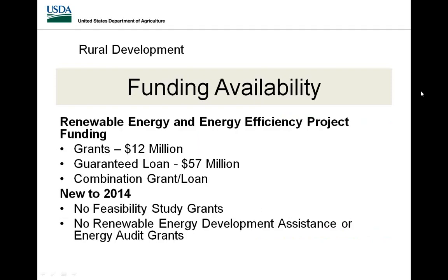The REAP program is commonly associated with its grant program, given its 25% cash share of the total project cost. The initial anticipated funding level for 2014 is $12 million in grant funds, allocated to the states. For those familiar with the program, $12 million is not very much when spread over 50 states. However, in the recent Farm Bill, $50 million was allocated annually for REAP funds, though it is not known when those funds will be available.